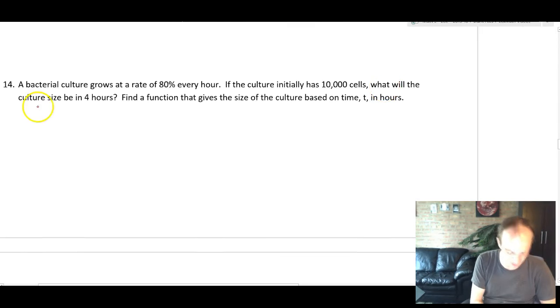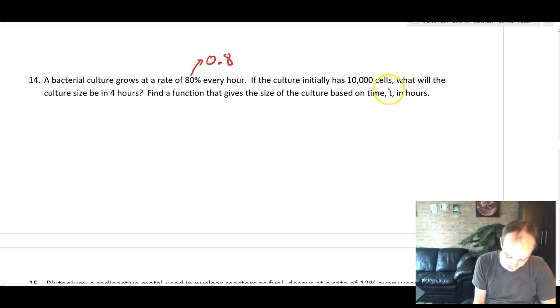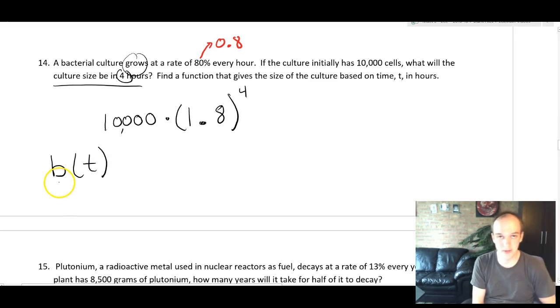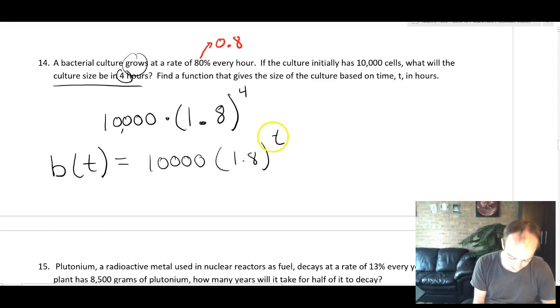Just because I value your time, I'm not going to evaluate this on the calculator. I trust that you can. If you have an expression like this, then you're most of the way there. All right, number four. A bacterial culture grows at a rate of 80% every hour. So 80% is 0.8. If the culture initially has 10,000 cells, what will be the culture's size in four hours? So let's try this out. We're going to do 10,000 because it was a starting value times. Now this one's tricky. This thing is growing. So we have to do 1 plus 0.8. So 1.8. And then after four hours, that's going to be 1.8 to the fourth. For part two, it says find a function. Well, we could write B of T for bacteria is equal to 10,000 times 1.8 to the T.